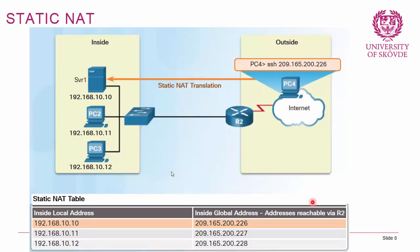With static NAT, we configure one-to-one mappings. In this example, Server 1 with private IP 192.168.10.10 is mapped to public IP 209.165.200.226. The private IP is the inside local address; the public IP is the inside global address, reachable through Router 2. Bi-directional communication is possible because Router 2 knows that any internet traffic arriving at that inside global address should be forwarded to the corresponding private address.